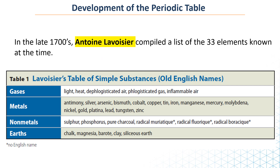Lavoisier compiled a list of 33 elements known at the time. Some of them didn't have proper names. He organized them into gases, metals, non-metals, and earths. There are some elements we recognize today like cobalt, copper, tin, iron, lead, gold, and silver. Some things didn't have the proper names that we know today.